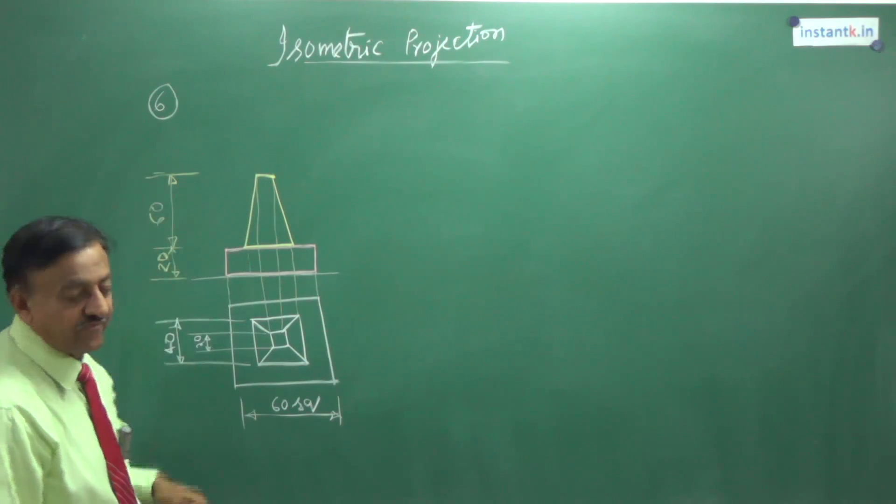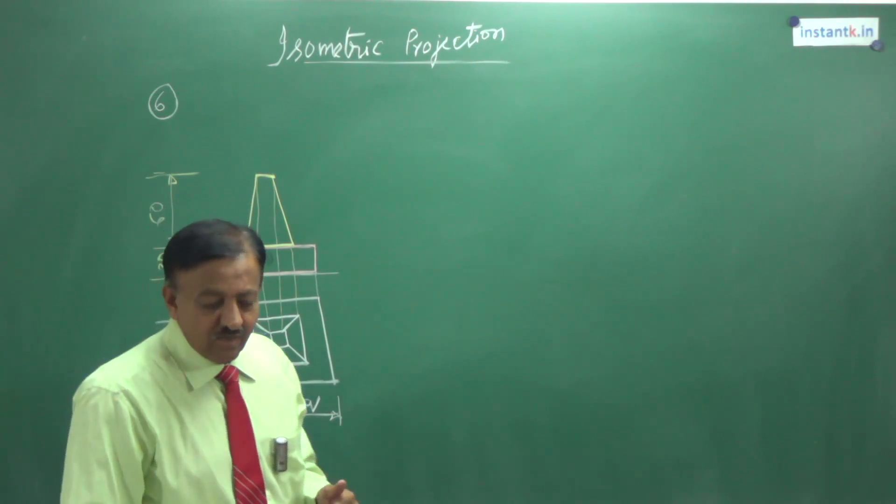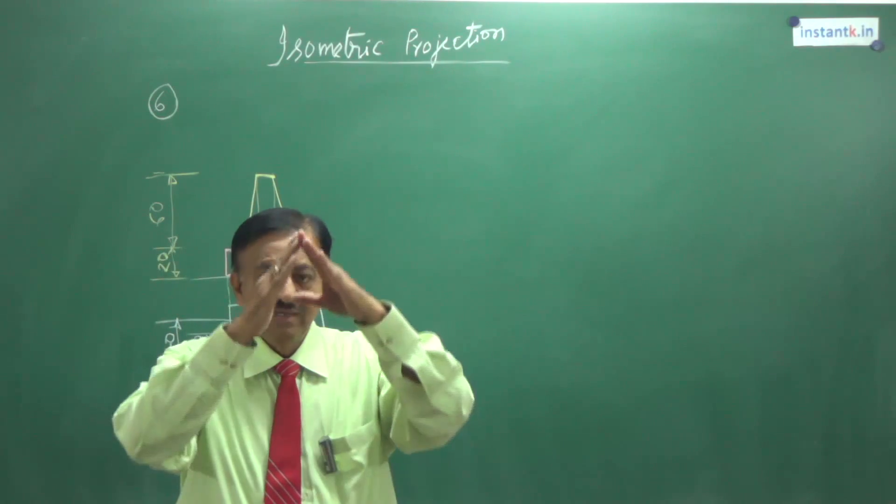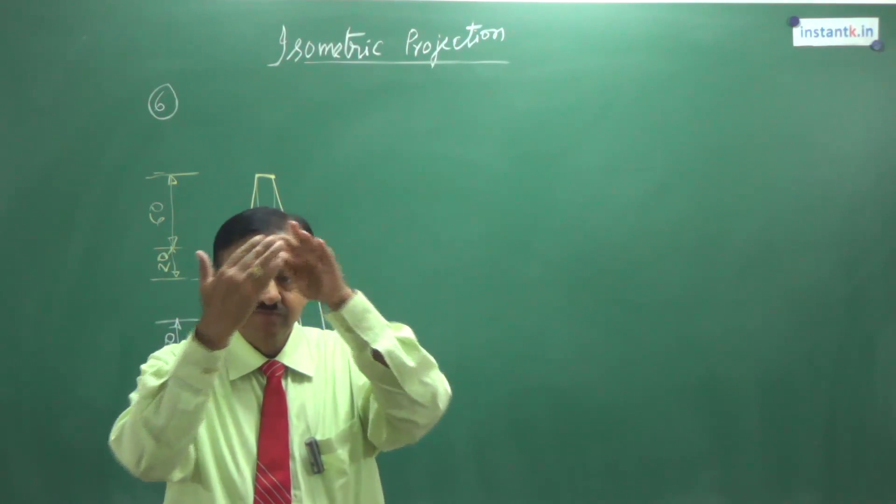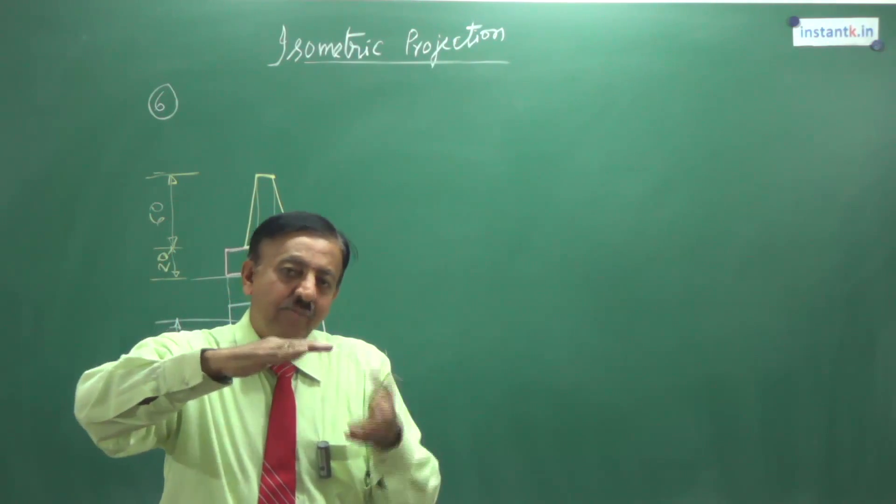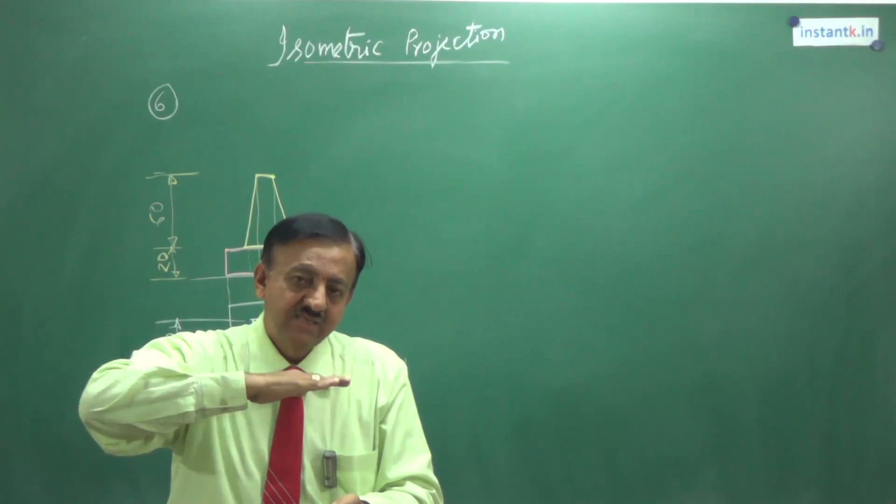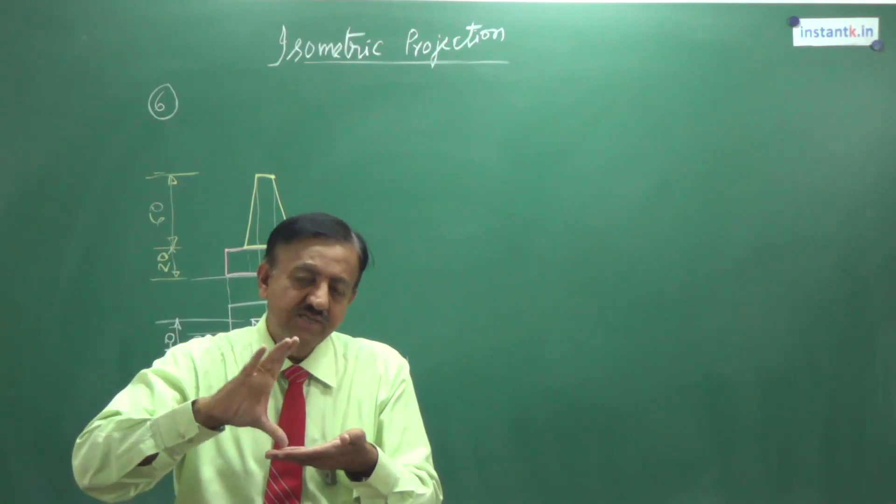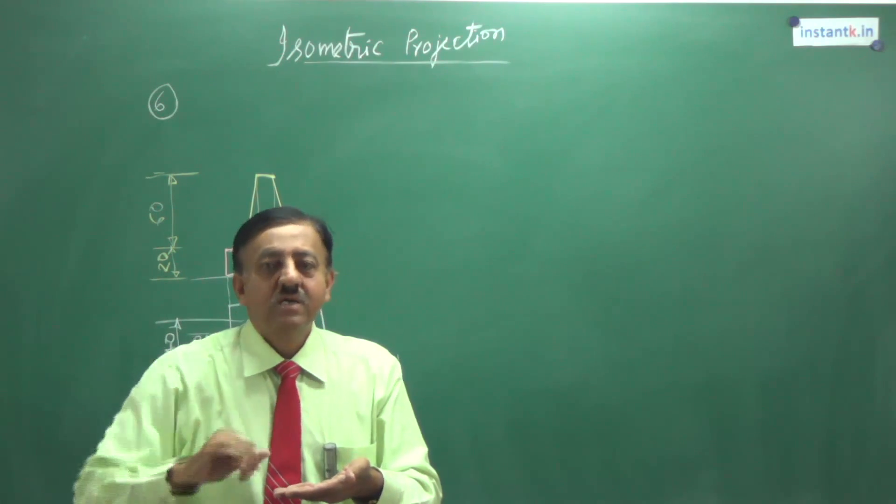So it is a frustum of a pyramid. What is the meaning of frustum of a pyramid? You take any pyramid, join it to the apex, and then you cut it parallel to the base at some place, whatever height you want. 60 mm height he has given, so at 60 mm height you cut the top face.